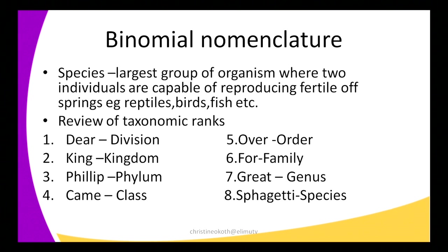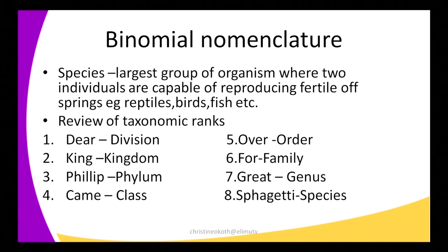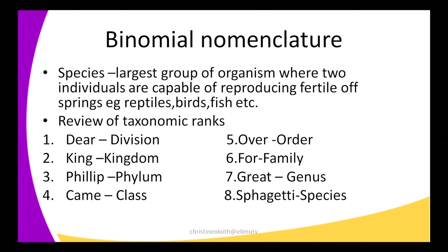So we have a review of taxonomy ranks — this is how we classify organisms from the biggest to the smallest so that you can arrive at the genus and the species. There is an acronym to help us remember how we rank organisms: 'Dear King Philip came over for great spaghetti.' We take the first letter of each word: D for Domain, K for Kingdom, P for Phylum, C for Class, O for Order, F for Family, G for Genus, S for Species.